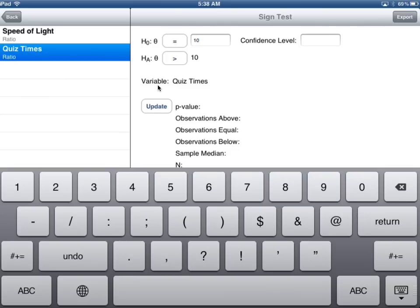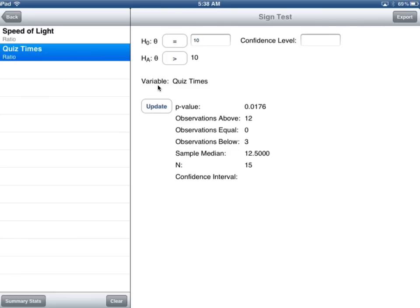It knows right now that I'm using quiz times because I have quiz times selected. Then all I have to do is tap update. And there's a bunch of information there. The p-value is 0.0176. Observations above is 12, equals is 0, below is 3. The sample median is 12.5, and n equals 15. Now, I'm going to talk to you in just a moment about what all of these are about.